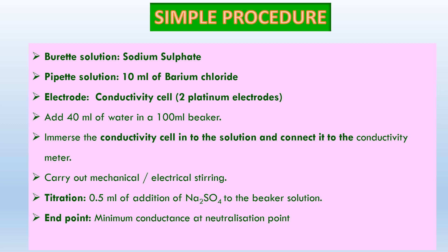For the procedure: in the burette, take sodium sulphate. Pipette out 10 ml of barium chloride and add it to a beaker. For the electrode, we use the conductivity cell — two platinum electrodes fixed at a distance. Add 40 ml of water for dilution so that you can dip the electrode properly and conduct the experiment.